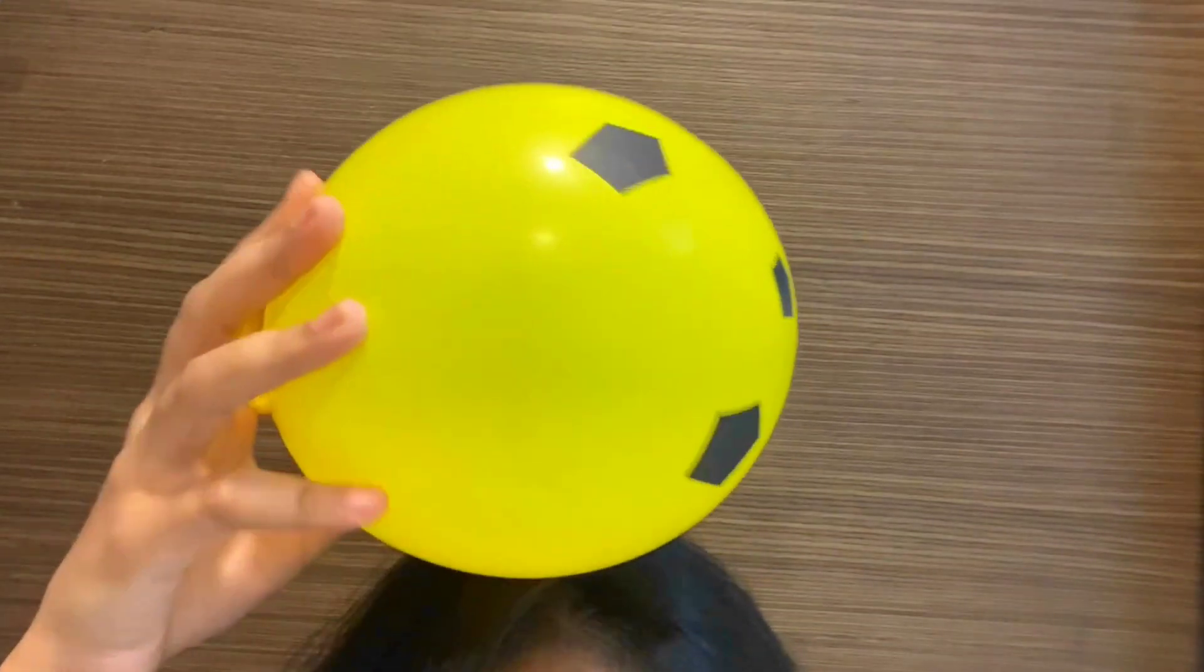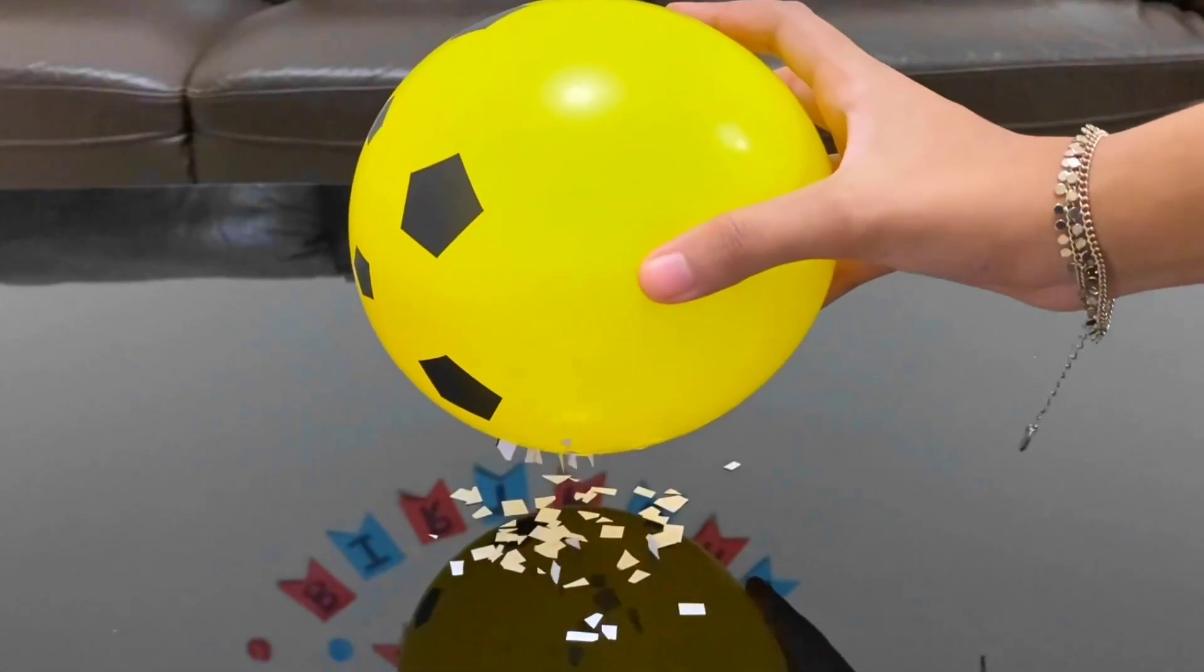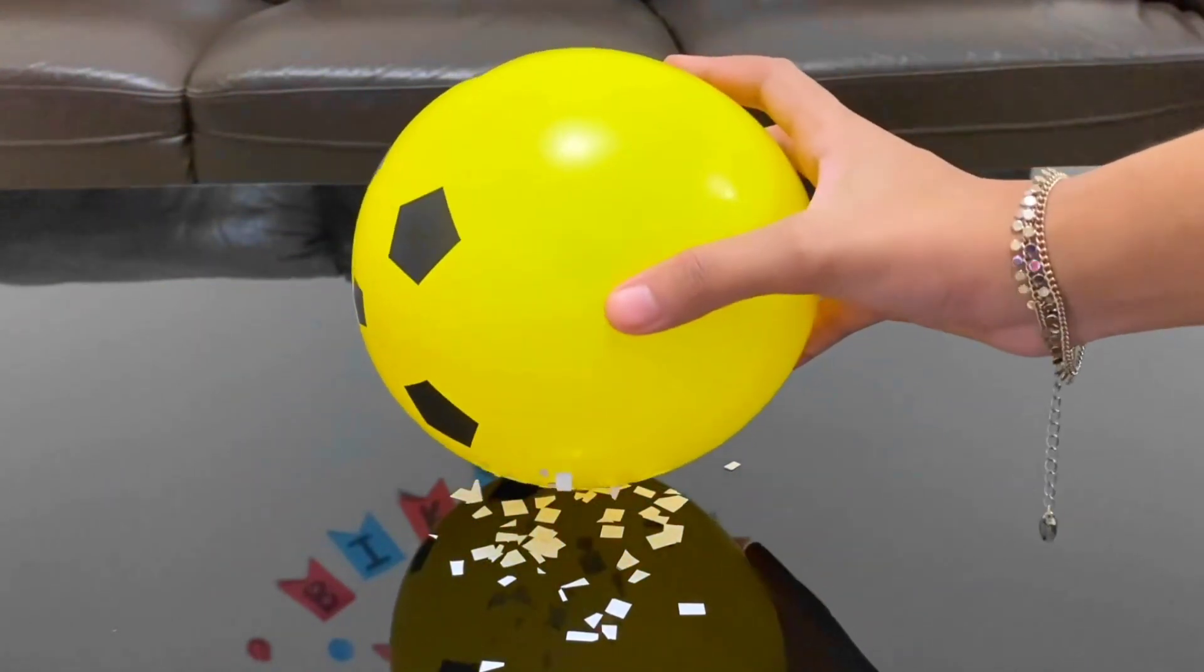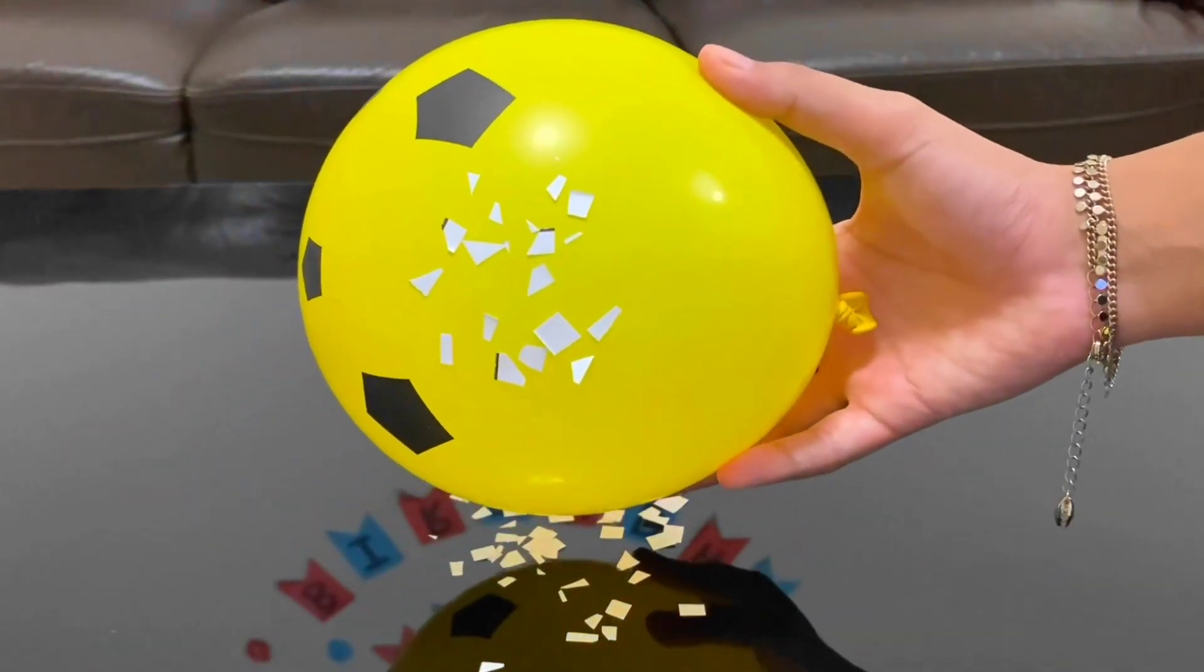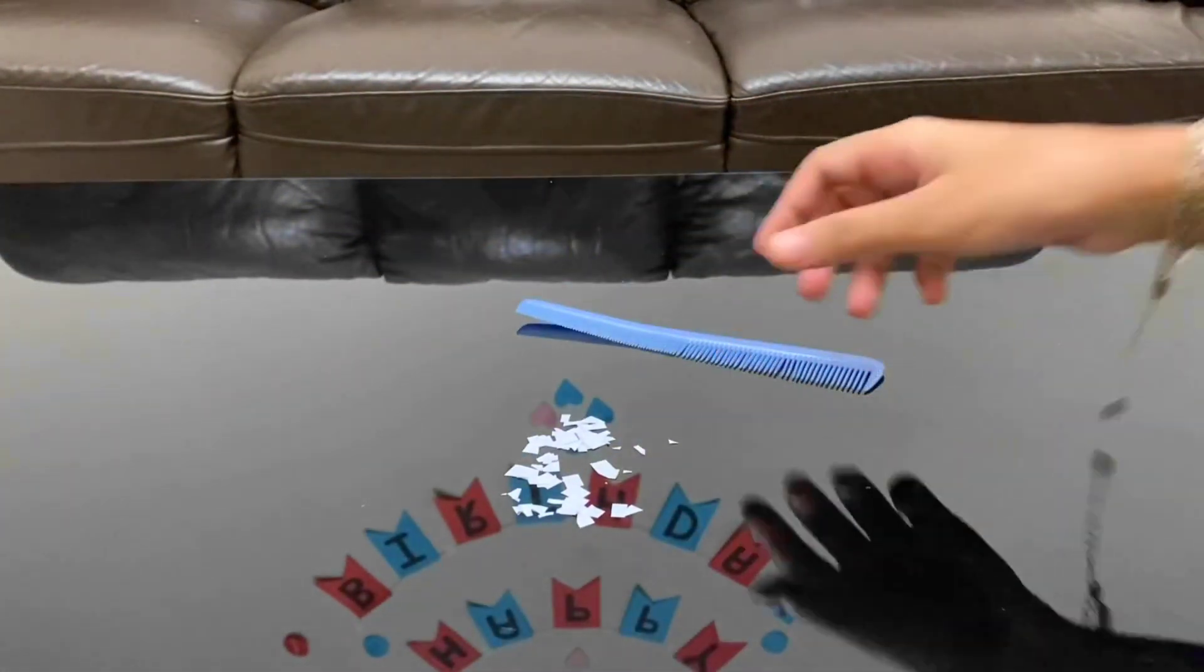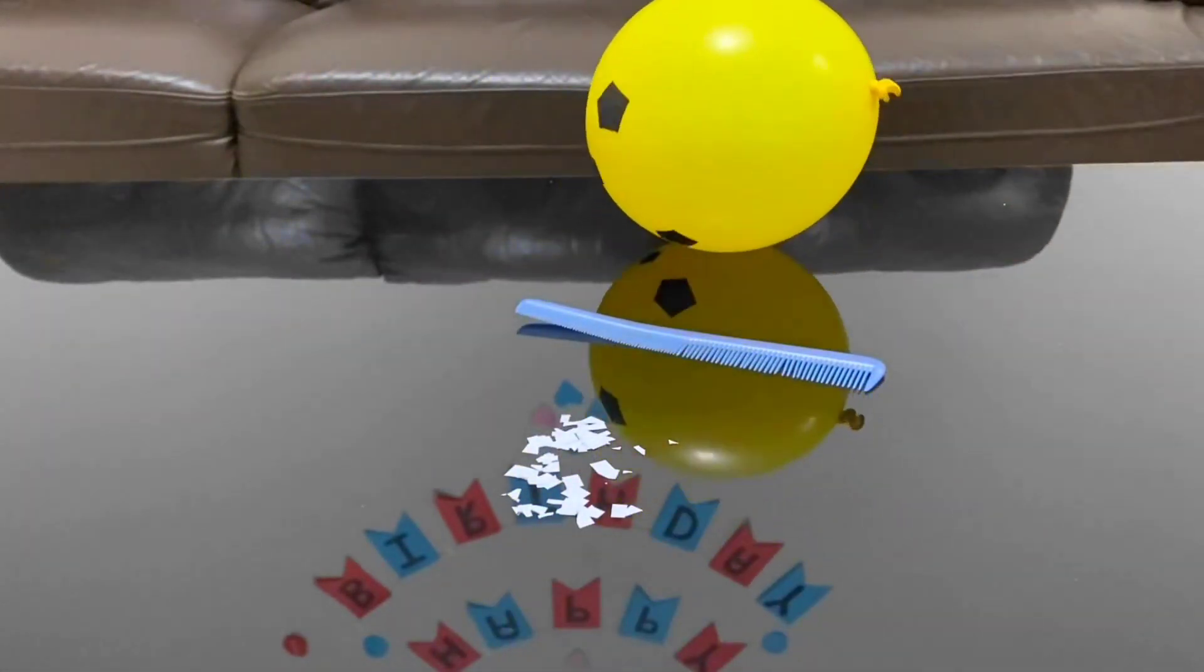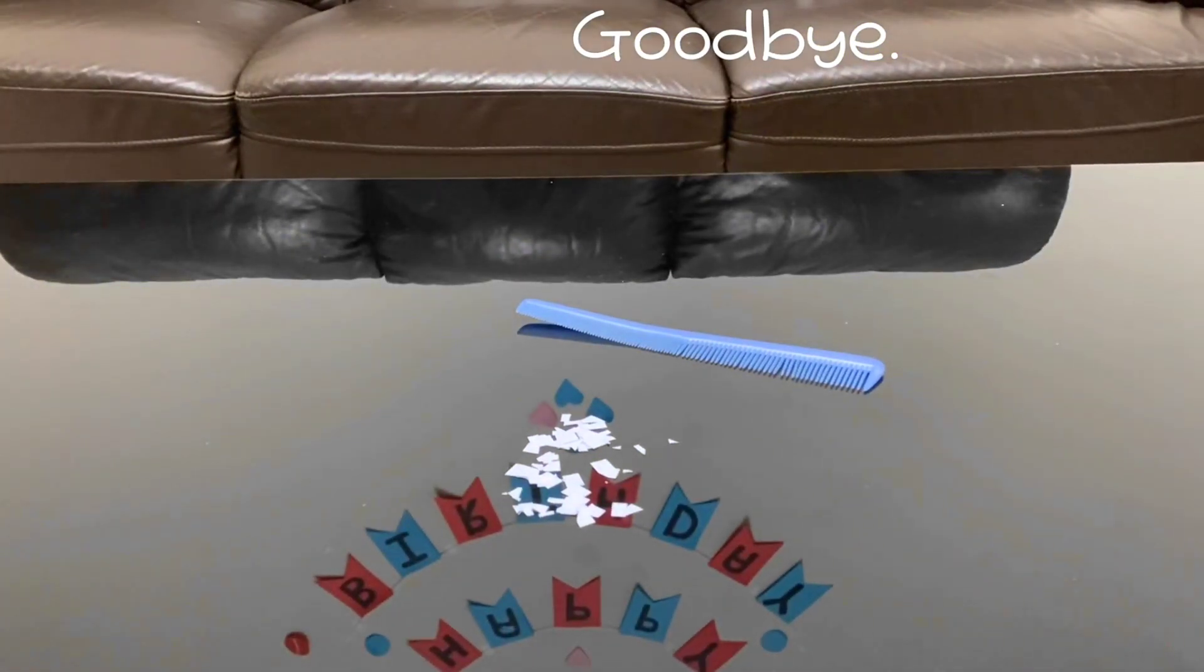Now, bring the balloon close to small bits of paper, confetti, or even your hair and watch as they are attracted to the balloon, sticking to it due to the static electricity. Kids will have fun experimenting with different materials and observing how the static charge interacts with various objects. They can even test how far they can make the confetti jump towards the balloon using only the power of static electricity. It's a fascinating and interactive experiment that will spark curiosity and excitement about the wonders of electrical charge and static energy.